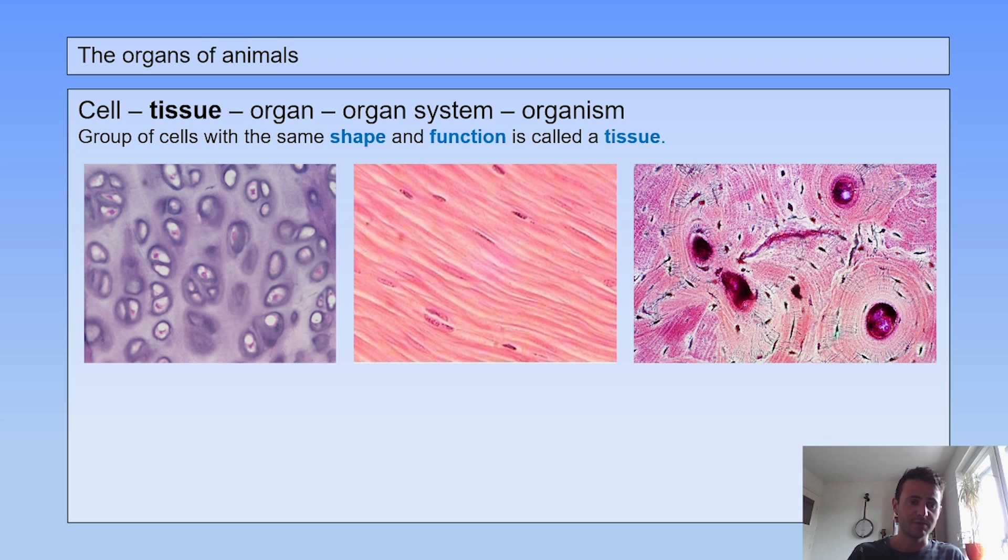This would be cartilage tissue, this would be muscle tissue, this would be bone tissue. As soon as they have the same shape and function, you call it a tissue.